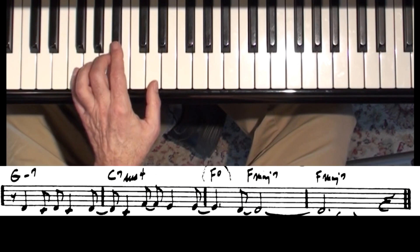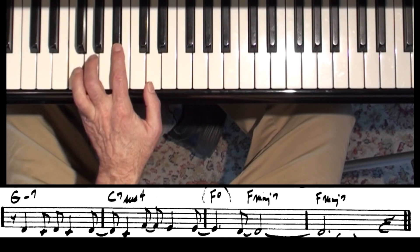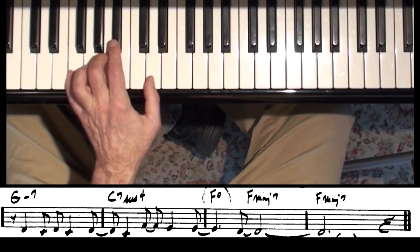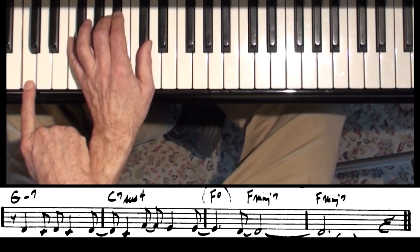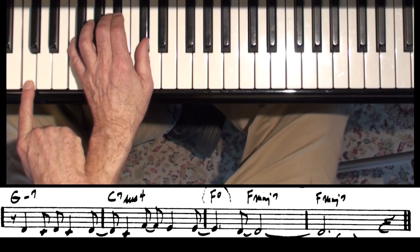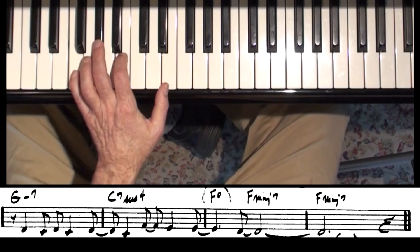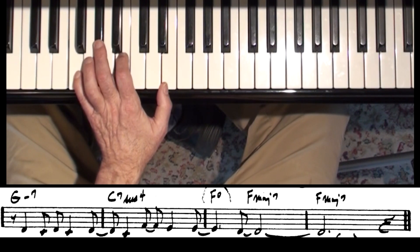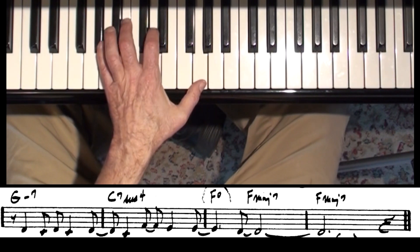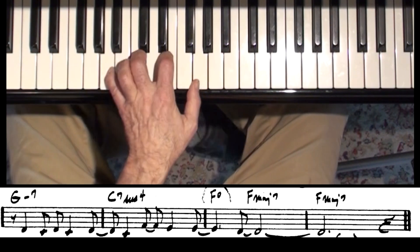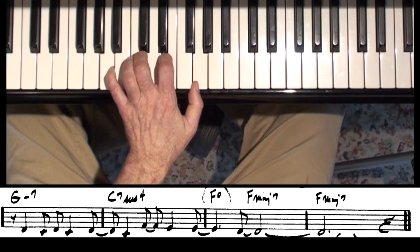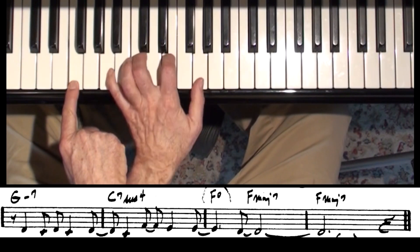And we've got G minor 7th. That's a rootless voicing because the G was moved up to the 9. And then C7, you can just stay there. You can flat the 9 if you want to. And then we've got F diminished. And look how it's exactly like A-flat diminished. I'm using the same chord. I could maybe take it up by a minor 3rd. Do it that way. Just so it sounds a little bit different. And there's F major 7th, also rootless.